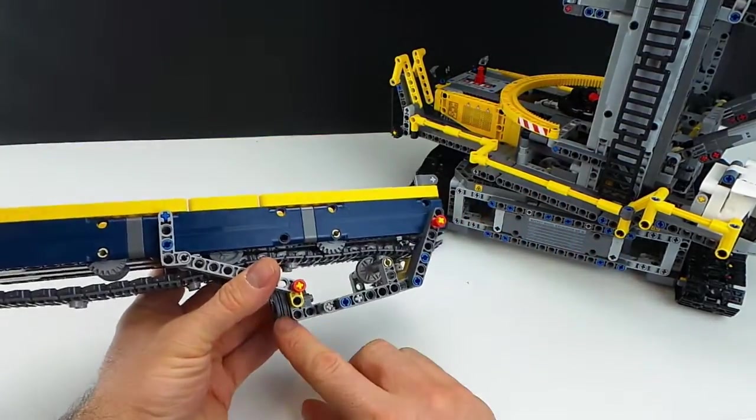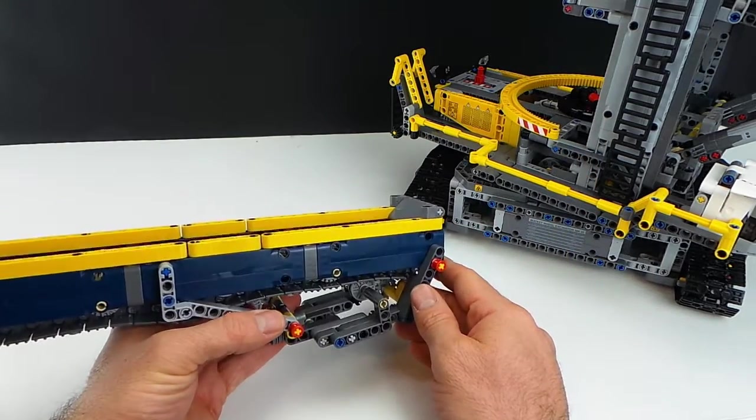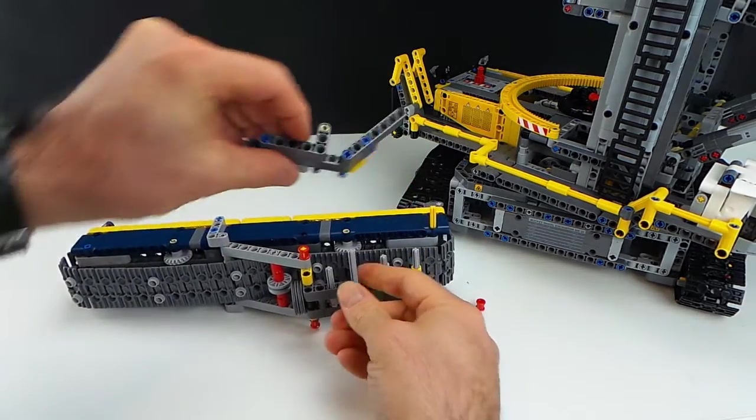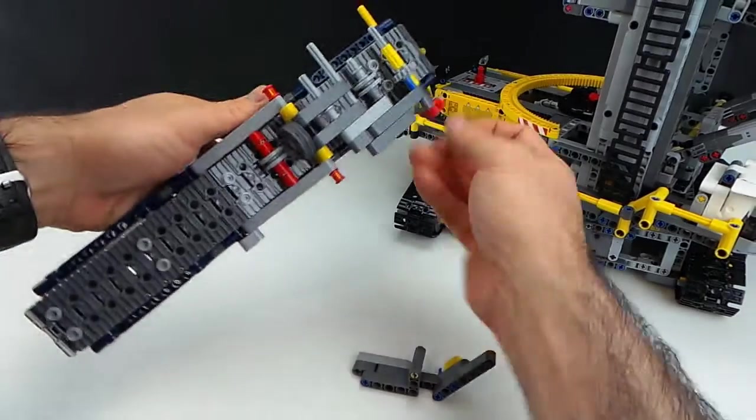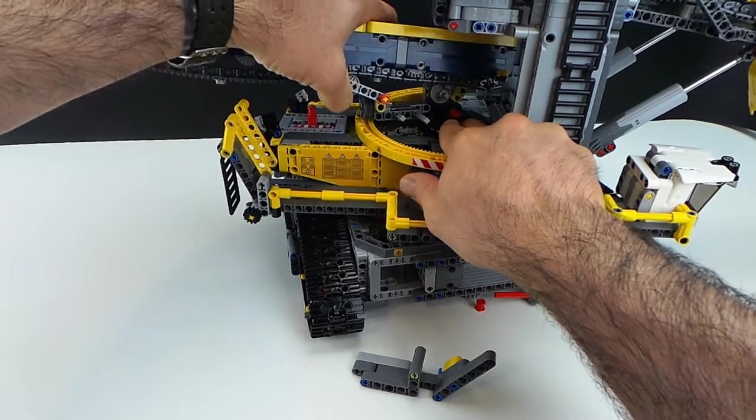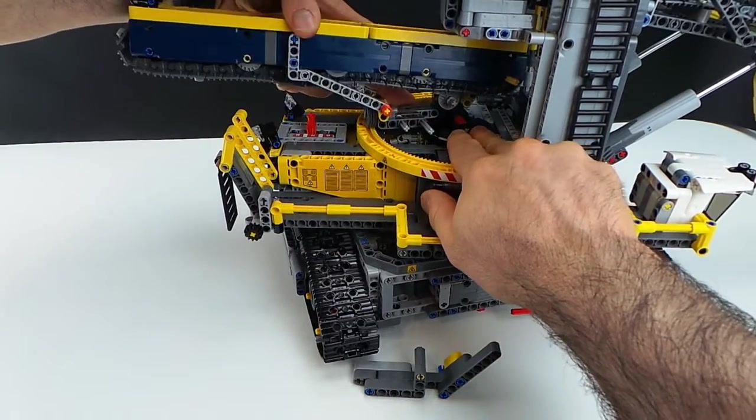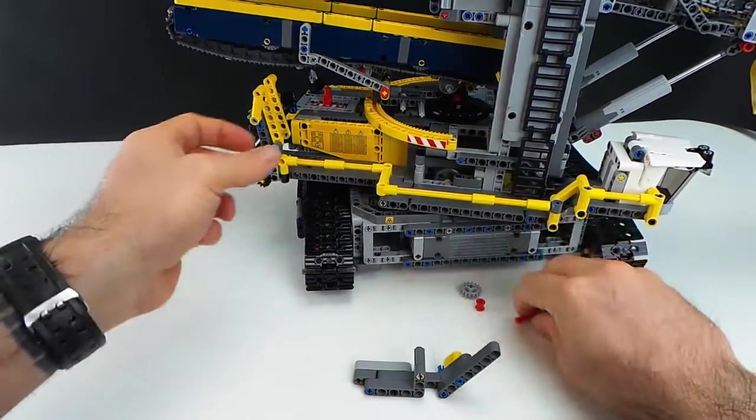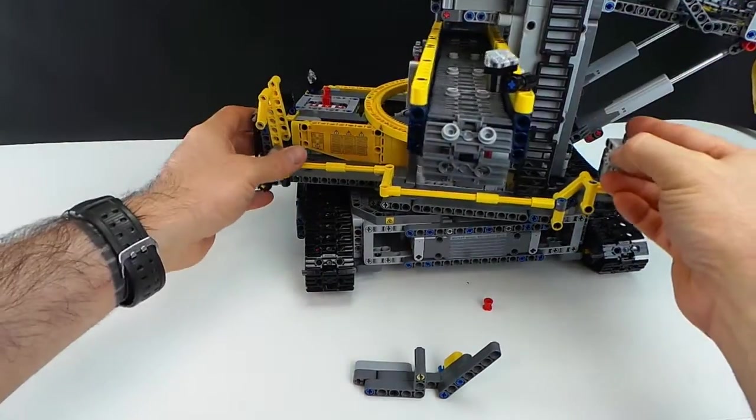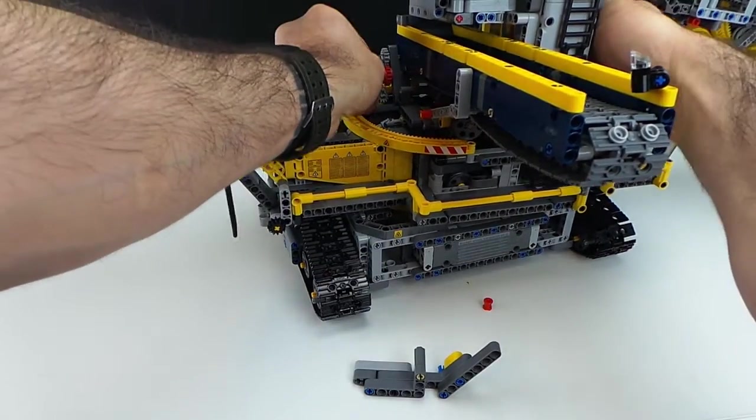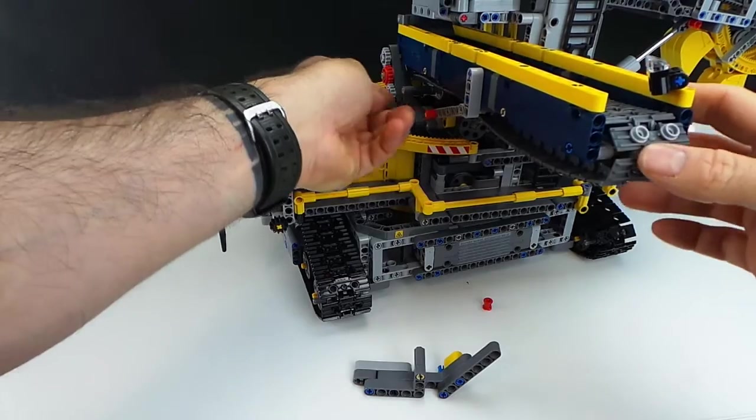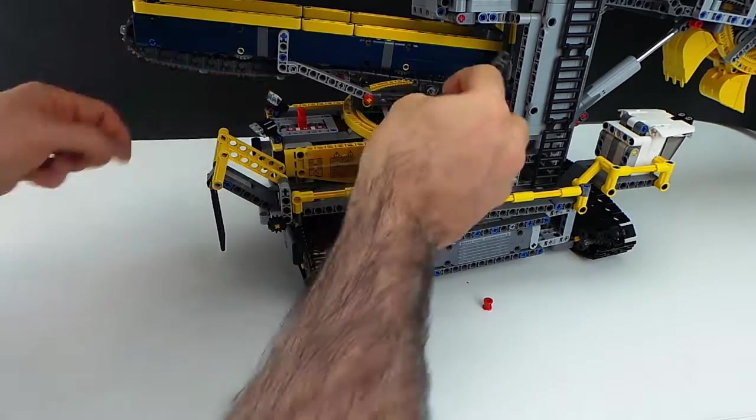Okay, now what we need to do is put this back on our bucket wheel. And to do that we just remove this section here, just like that, and then we put it back in. Remove the gear, the gear goes back in, the external drive gear goes back on, back on here, back on here, and we can fit our beam back in to hold it all together.